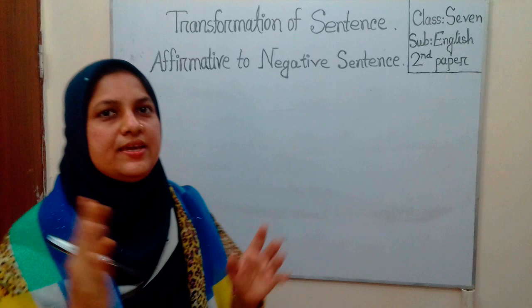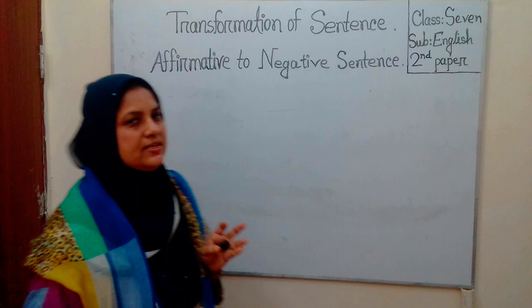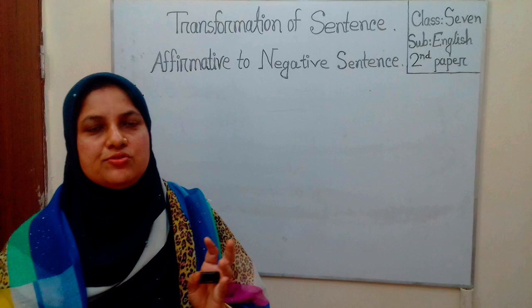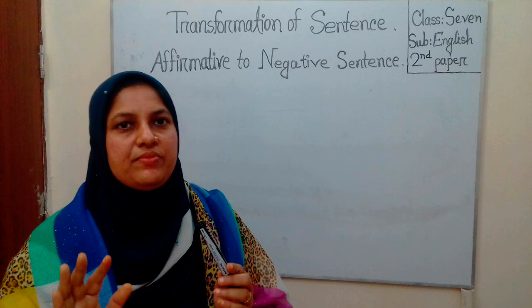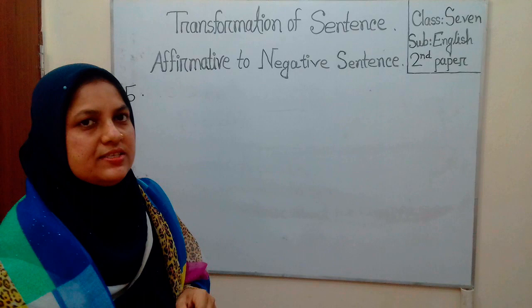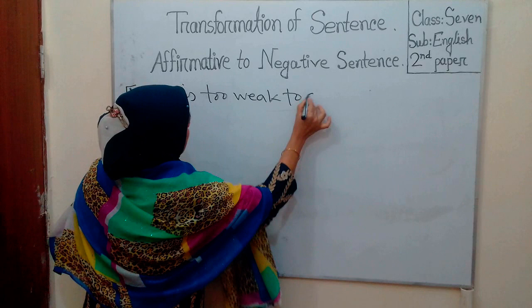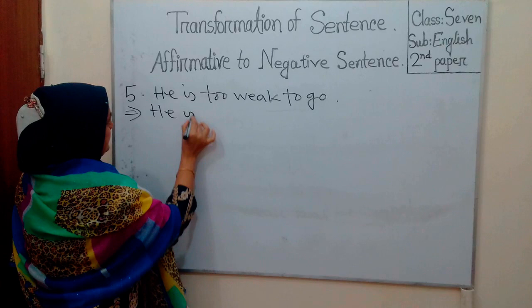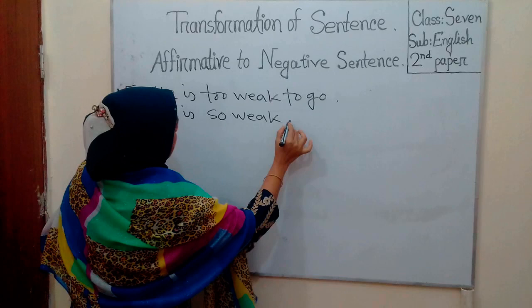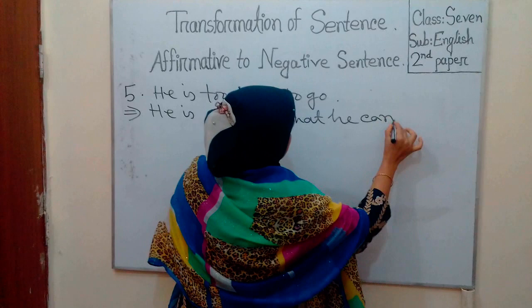Rule 5. If there is 'too...to' in the affirmative sentence, it should be changed into a negative sentence using 'so...that...cannot'. For example: 'He is too weak to go.' Negative sentence: 'He is so weak that he cannot go.'